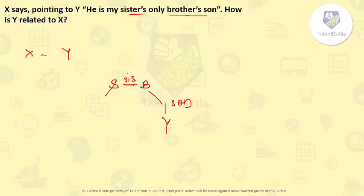So here B is no one but X because S is having only one brother and the person talking is S brother. So Y is son of that person. So your answer will be son because Y is son of X.